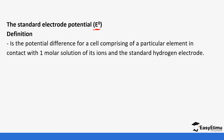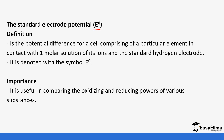For example, we take our copper-copper ion half cell and compare it with our standard hydrogen electrode, and the difference we get in their potential values is what we refer to as a standard electrode potential. It is denoted with that symbol, which you will see a lot in tables. It helps us to compare the oxidizing and reducing powers of various substances.